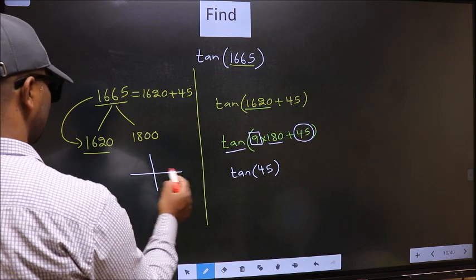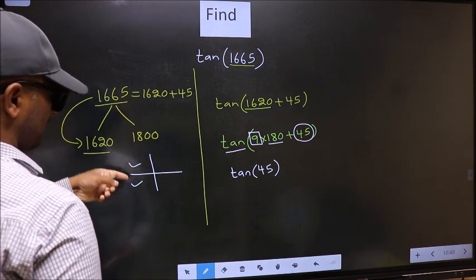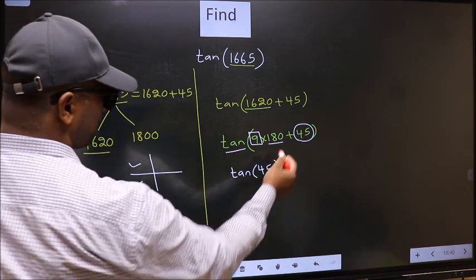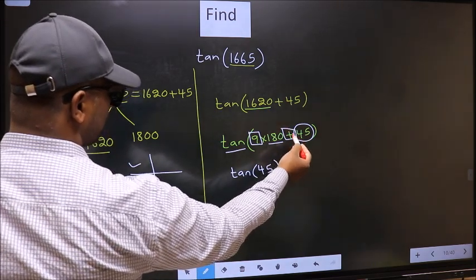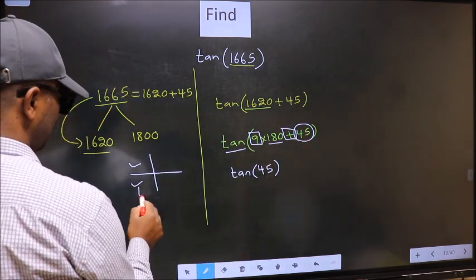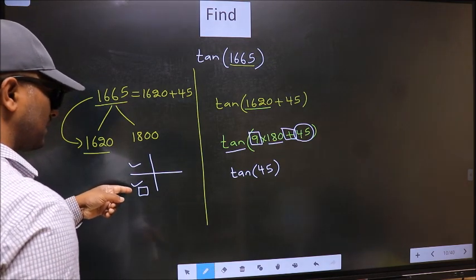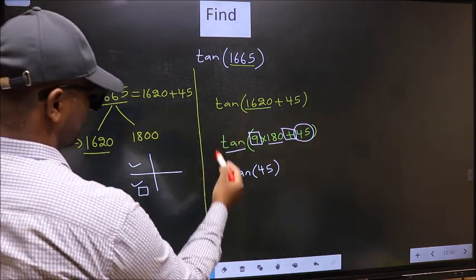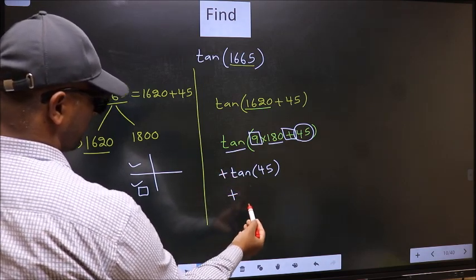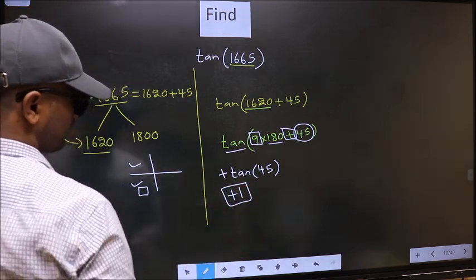To select the quadrant, we should look at this symbol. Here we have plus, which means the angle lies in the third quadrant. In the third quadrant, tan is positive, so we should put plus. Therefore, tan(45°) = 1. This is our answer.